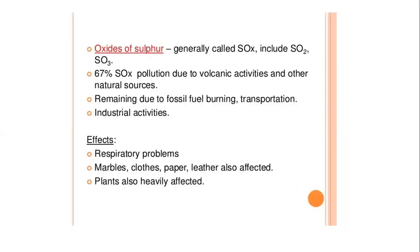Oxides of sulfur are released from volcanic eruptions and are generally called SOx, comprising SO2 and SO3. About 67% of SOx pollution comes from volcanic activity, with the remainder due to fossil fuel burning, transportation, and industrial activity. SOx causes respiratory health problems, and also damages marble, cloth, paper, leather, and heavily affects plants.